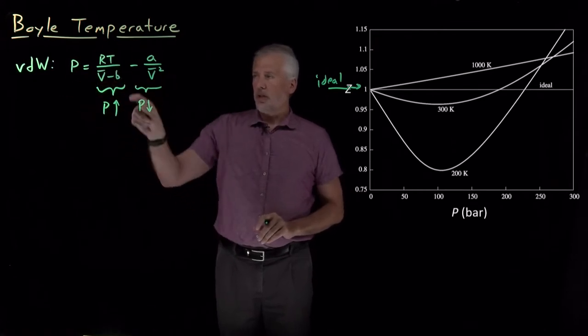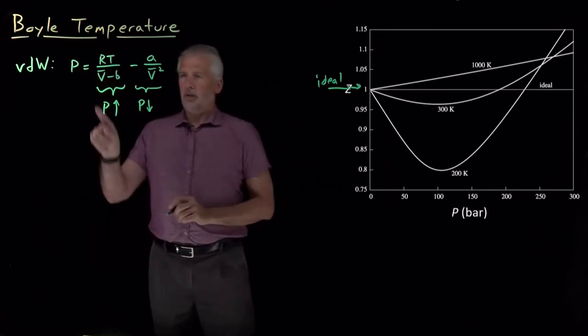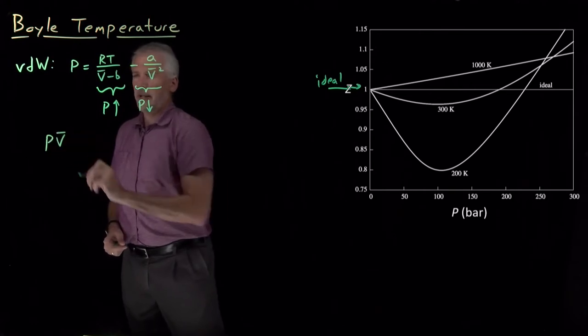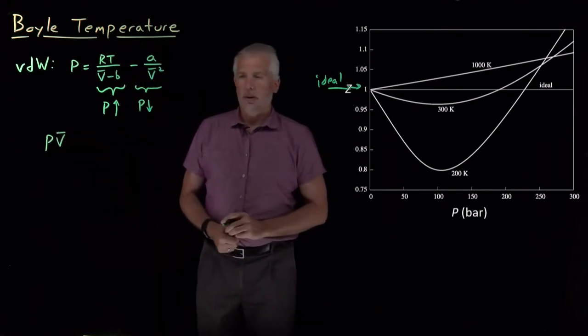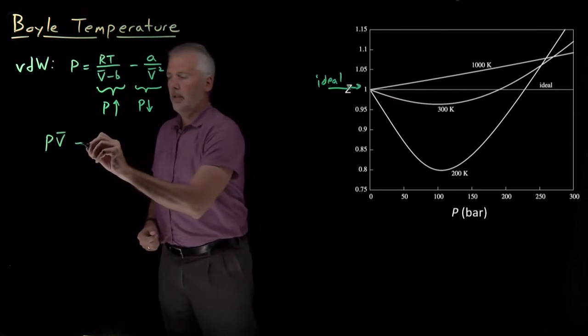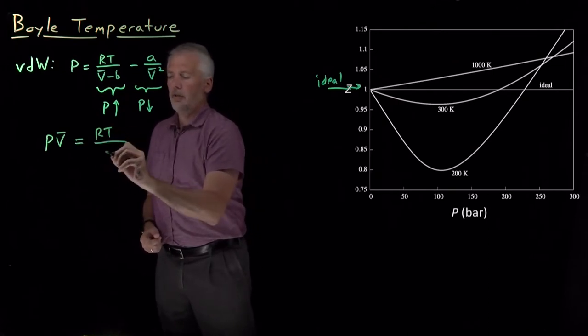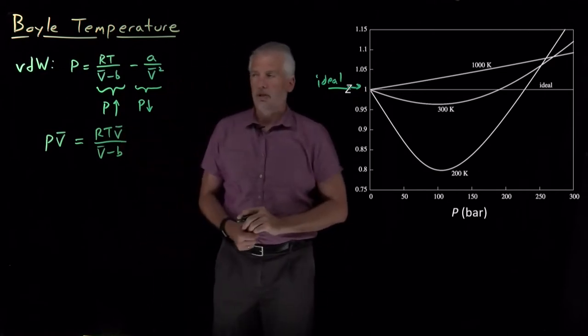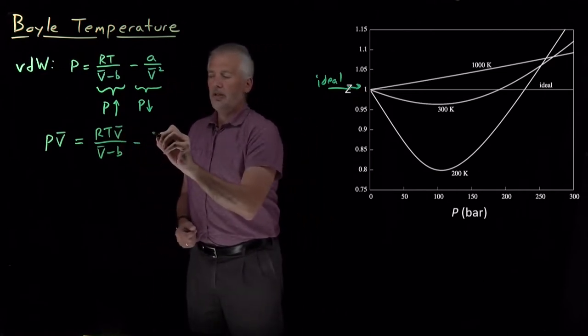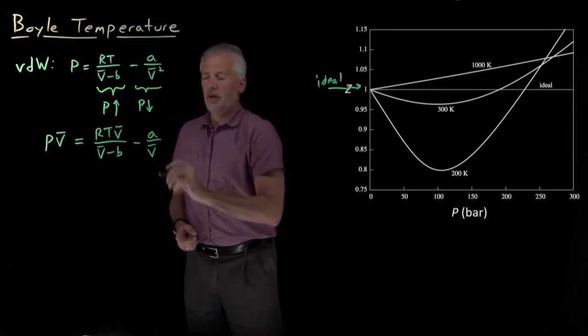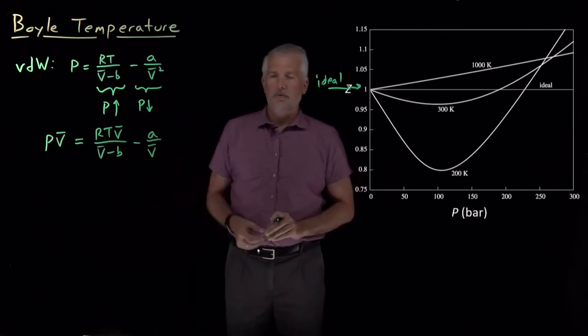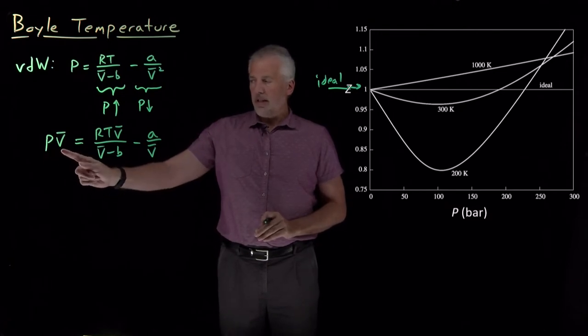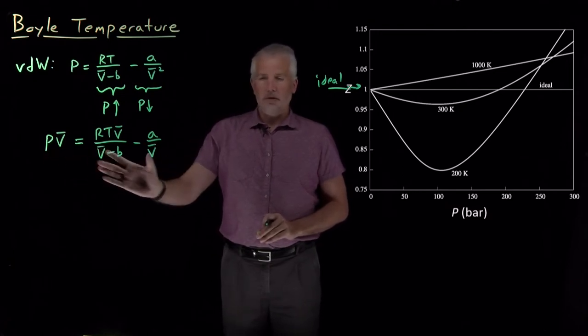So what we're interested in doing is rearranging this equation. Let me go ahead and write this equation. Let me multiply it by V-bar. So I'll multiply by V-bar on the left. And so on the right, I've got RT V over V minus B. And then in the second term, multiplying by V-bar just removes one of the V-bars from the denominator. So now I've gotten it written as PV bar equals this quantity for a van der Waals gas.